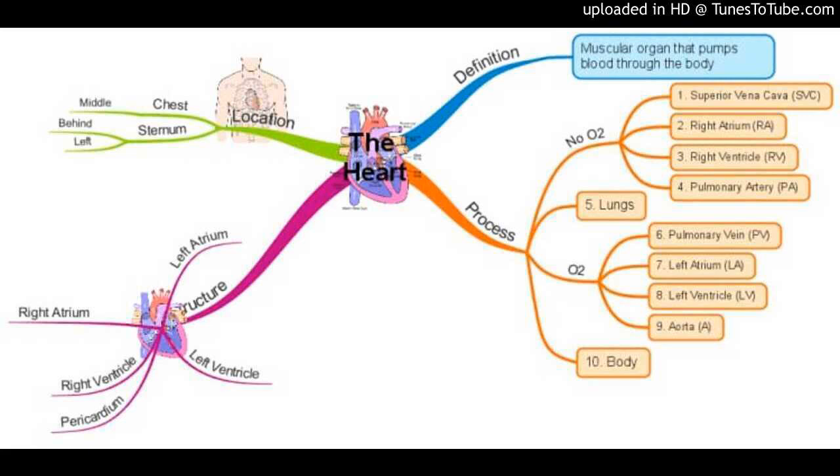The main transport system in human beings is the circulatory system. It consists of blood, arteries, veins, capillaries and heart. Blood transports food, oxygen and waste products. It consists of plasma, red blood cells, white blood cells and platelets. Plasma transports food, water, carbon dioxide, and nitrogenous waste.